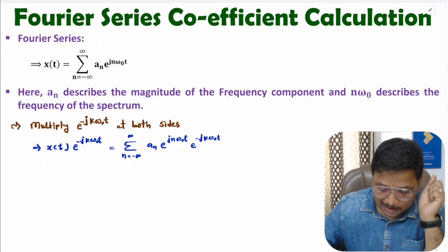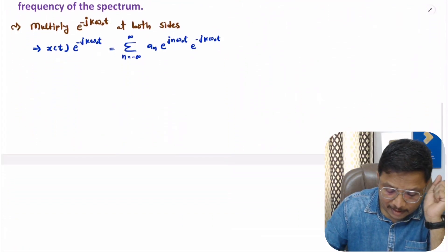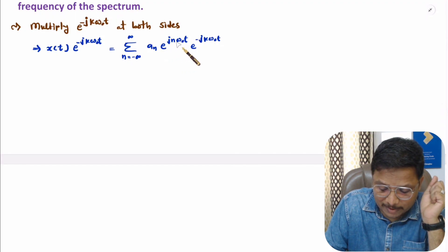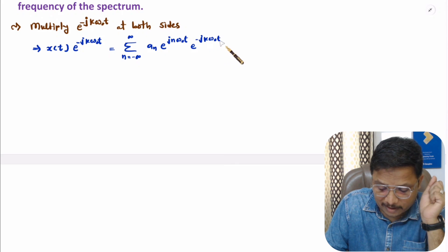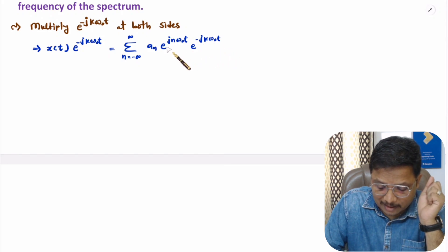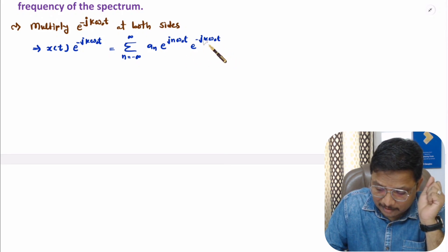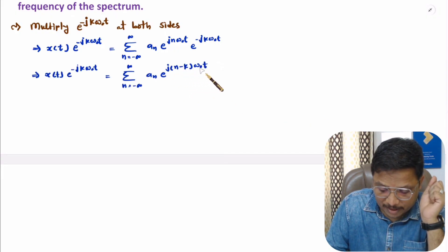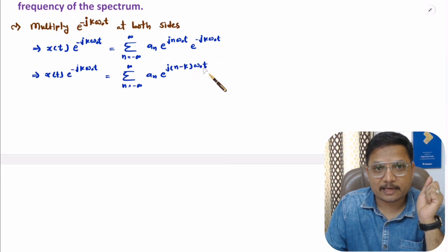Now I will simplify this side. Here we have e to the power jn omega naught t and e to the power minus jk omega naught t. Since their powers can be added, we will have e to the power j(n minus k) omega naught t.